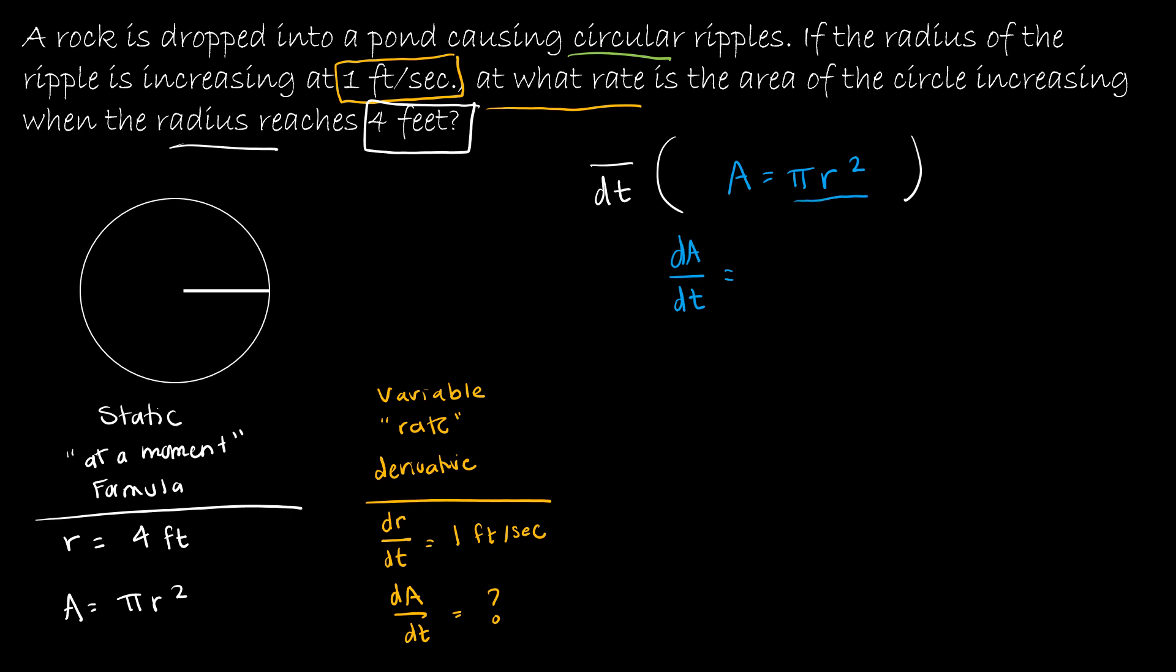The derivative of the right hand side, π r² is 2π, which is a constant, and then r to the first. But again, implicitly then, now I have dr over dt. So implicitly, chain rule, the derivative of radius with respect to time.